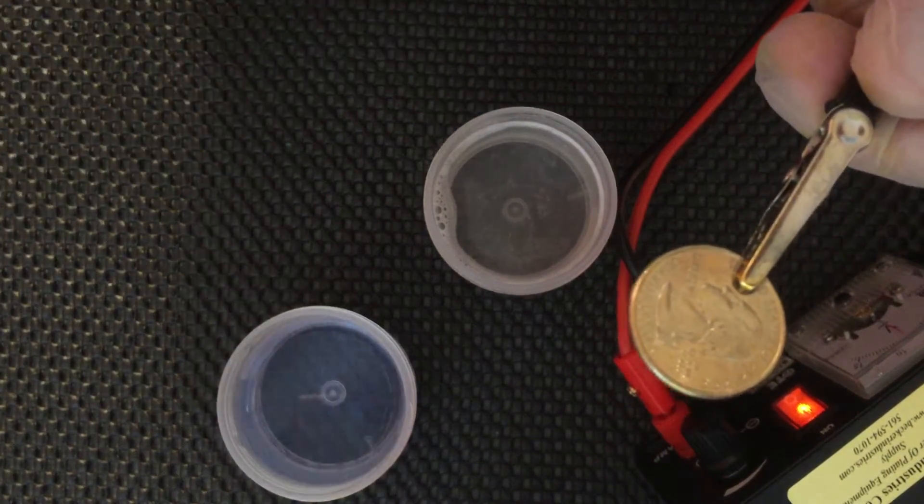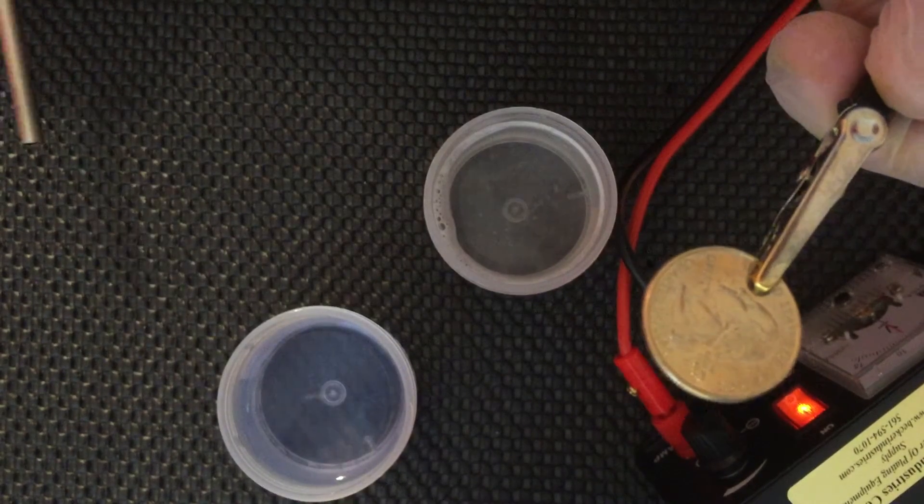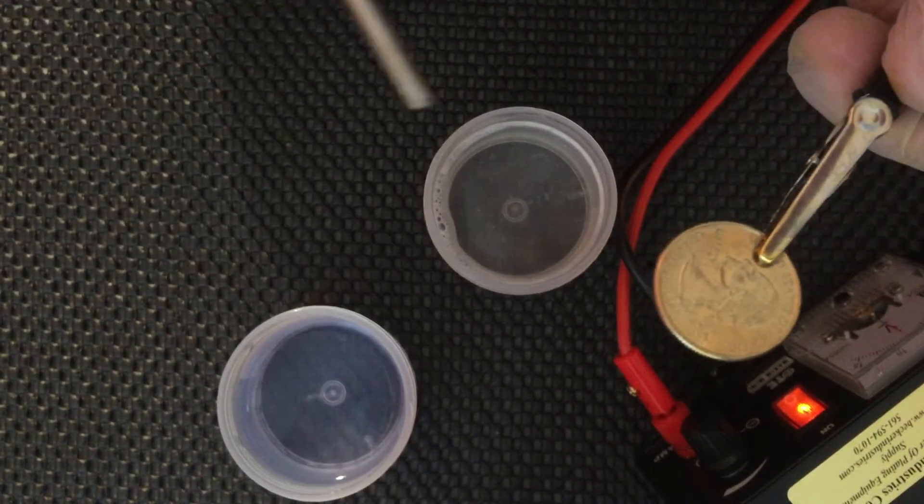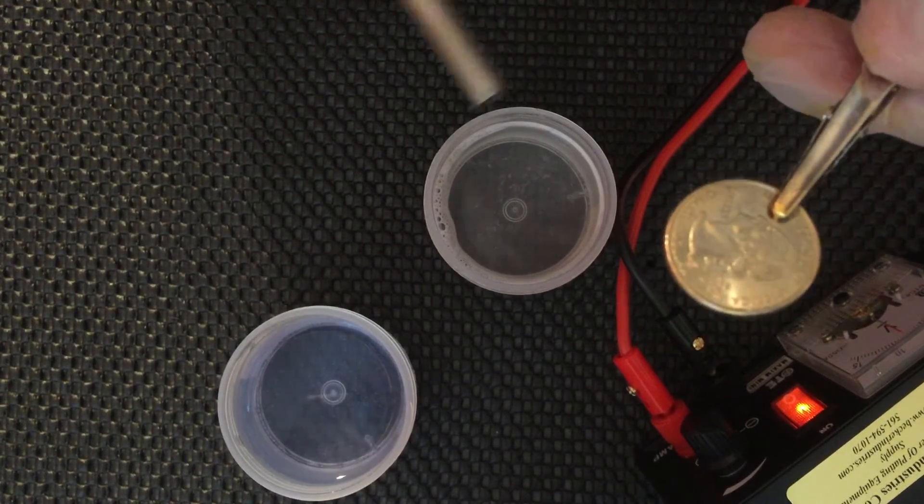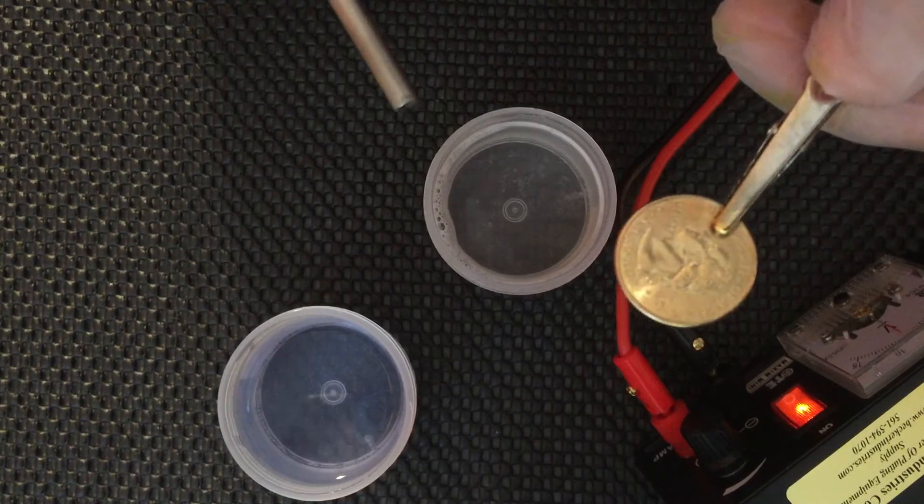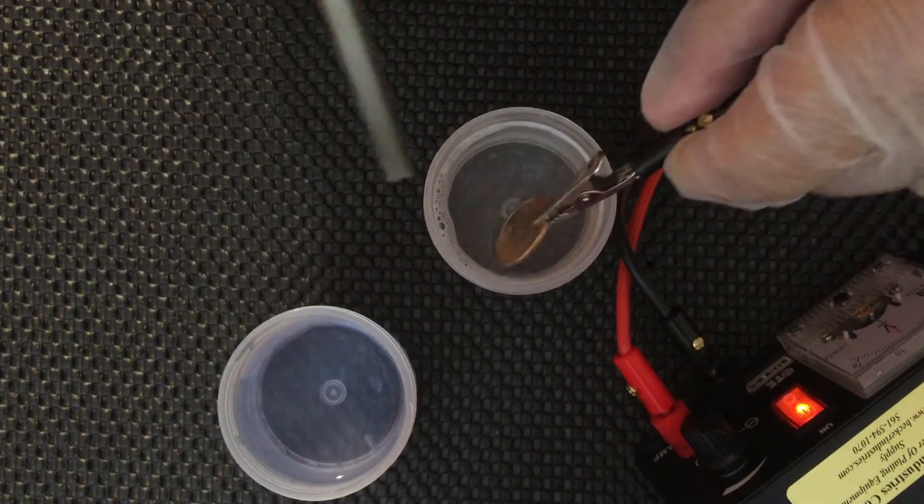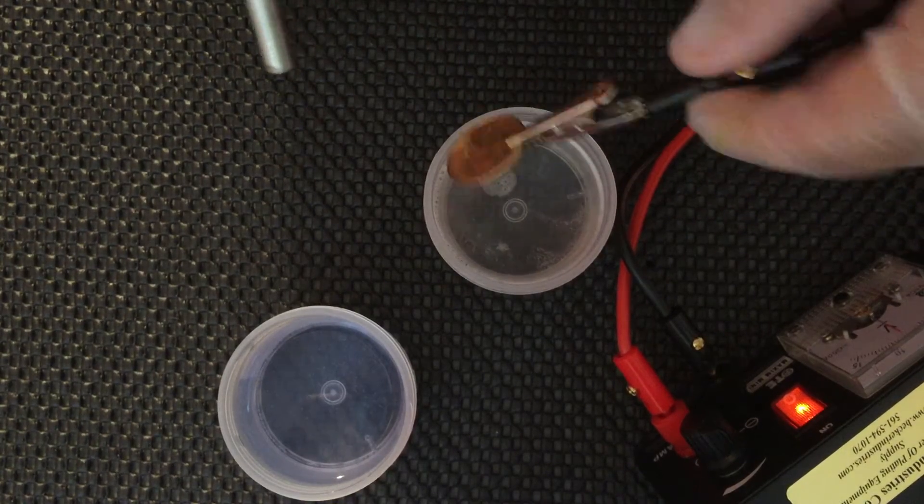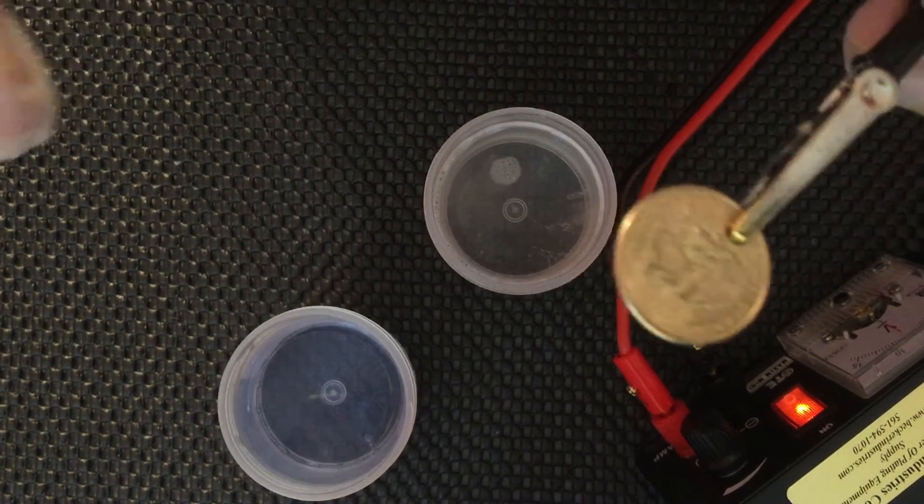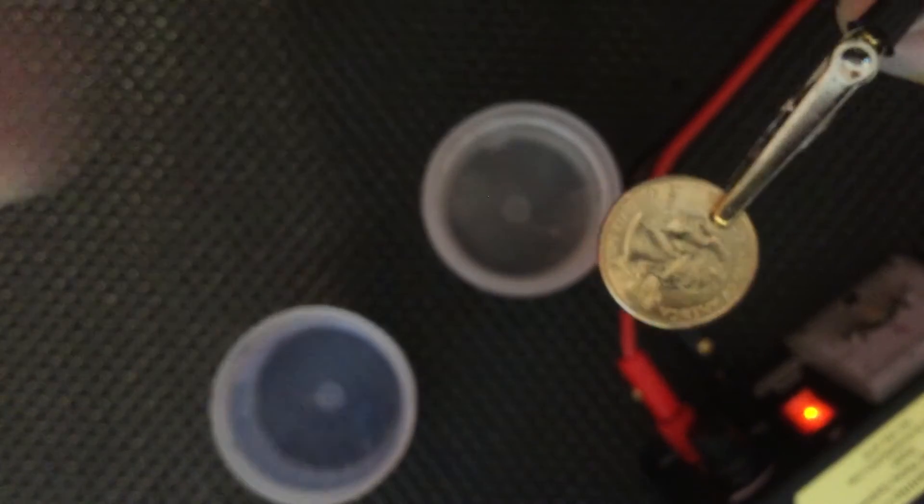He had it like over a minute. But as soon as the gold bonds to your part, you pull it out. What I do usually is leave it, as I said, like 15-20 seconds. After 20 seconds, I pull it out and check it. If it's done, I'm all set. If it's not, I leave another five seconds.